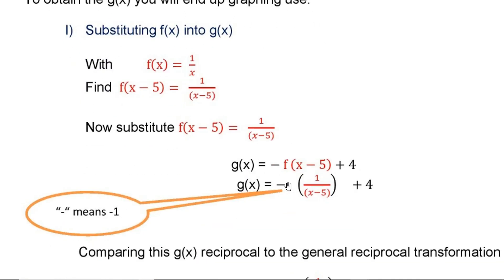So g(x) becomes -f... this -f(x-5) has to be replaced by 1/(x-5). Minus remains same, 4 remains same. Only this f(x-5) has become 1/(x-5).